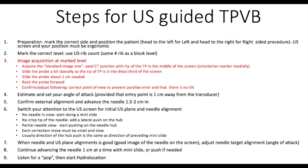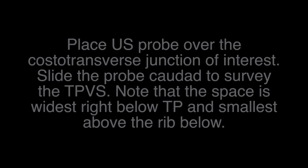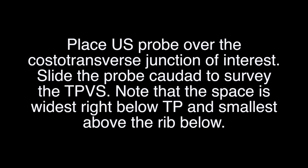Image acquisition at the marked level. Place the ultrasound probe over the costo-transverse junction of interest. Slide the probe caudad to survey the thoracic paravertebral space (TPVS). Note that the space is widest right below the transverse process and smallest above the rib below.